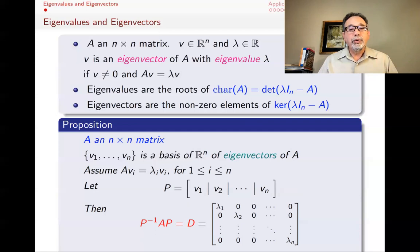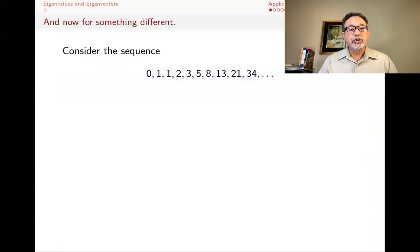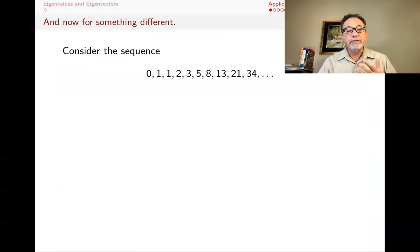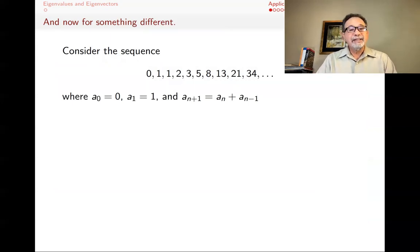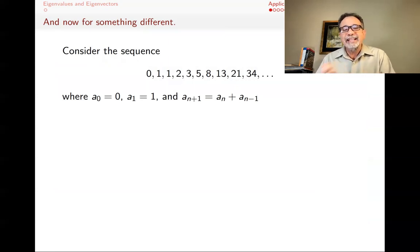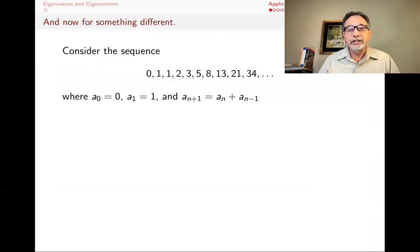Now we want to apply this idea to a recurrence relation. Consider the following sequence — it starts with 0, 1, 1, 2, 3, 5, 8, 13, 21, 34. It starts with 0 and 1, and then every term is the sum of the previous two terms. At this point it's unclear what this has to do with linear algebra or matrices or diagonalization at all.